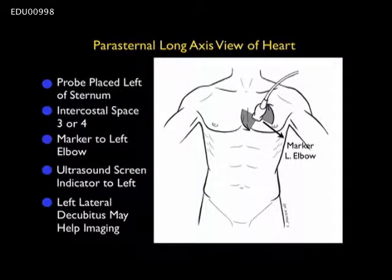Let's review how to perform the cardiac evaluation beginning with the parasternal long axis view. We want to use a smaller footprint phased array probe that can easily fit between the ribs to get a good view onto the heart. We'll generally begin in intercostal space three or four with the marker dot on the probe down towards the patient's left elbow — with the caveat that the ultrasound screen indicator is maintained toward the left of the screen. Moving the patient into left lateral decubitus position may aid assessment by moving the heart closer to the chest wall.